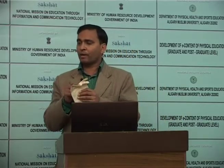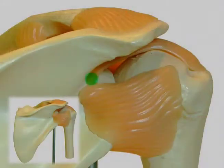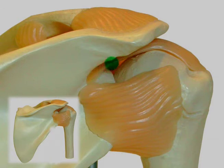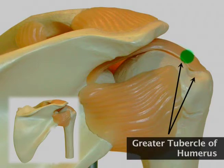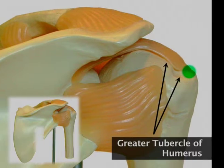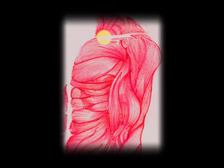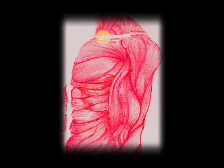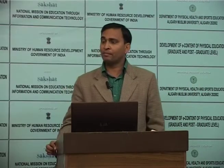The supraspinatus muscle originates from the dorsal surface of the supraspinous area of the scapula. You can see in the diagram it passes under the acromion to attach over the greater tubercle (GT) of the humerus. The muscle originates from the supraspinatus area and inserts over the GT. This muscle has great importance in most shoulder joint pathologies, especially shoulder impingement syndrome.